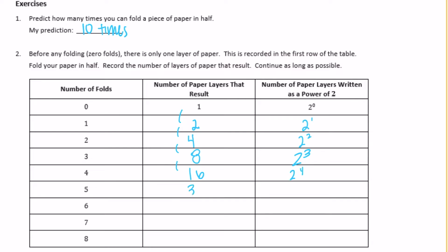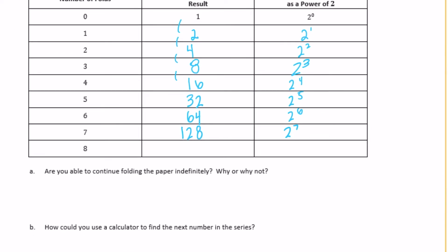2 to the fourth power — fold it again. There are 32 layers, or 2 to the fifth power, at 5 folds. Fold it again — it doubles to 64, or 2 to the sixth power. Fold again: 64 times 2 is 128, or 2 to the seventh power. One more fold gives 256, which is 2 to the eighth power. That's the end of the chart, so I'm going to stop.